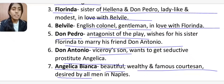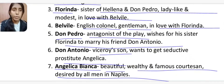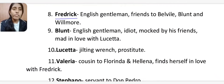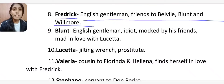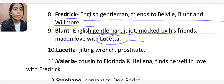Frederick is an English gentleman and friend to Belville, Blunt and Willmore. Blunt is a gentleman who is mocked by his friends because he falls in love with Lucita, who does not genuinely love him. Lucita is a jilting prostitute. Valeria is cousin to Florinda and Helena and finds herself in love with Frederick. Stefano is servant to Don Pedro. Filippo is Lucita's lover and helps her to fool and rob Blunt. Senko is Lucita's pimp and also helps her rob Blunt.